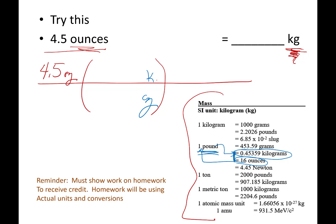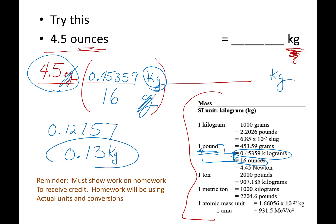And the bottom is 16 ounces. The top is 0.45359 kilograms. Ounces will cancel. Kilograms will stay. When I put it all through my calculator, I got 0.12757. And then I started with two digits, I want to end with two digits. 0.13 kilograms. And remember, when you do your homework, you're going to have to show your work.